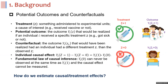Causal effects estimation is about understanding the impact of intervention or treatment on outcomes. For example, we are interested in what happens when an individual does or does not receive a specific treatment. However, we face a fundamental challenge: it is impossible to observe both outcomes for an individual. So we usually look for the average treatment effect or conditional average treatment effect.